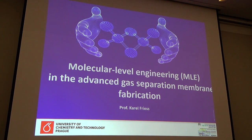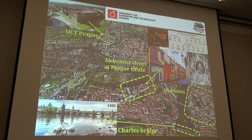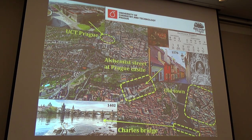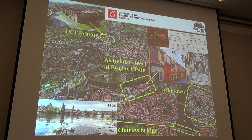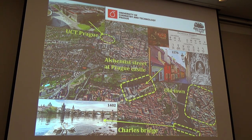I'm from the University of Chemistry and Technology Prague. If you are not familiar with Central Europe history and geography, Prague is the capital of Czech Republic. Our university is located very close to the historic center, and it is the first chemistry institute in our country. In the 16th century there were alchemists who wanted to convert metals to gold. So we have some history in chemistry technology for specific separations and operations.